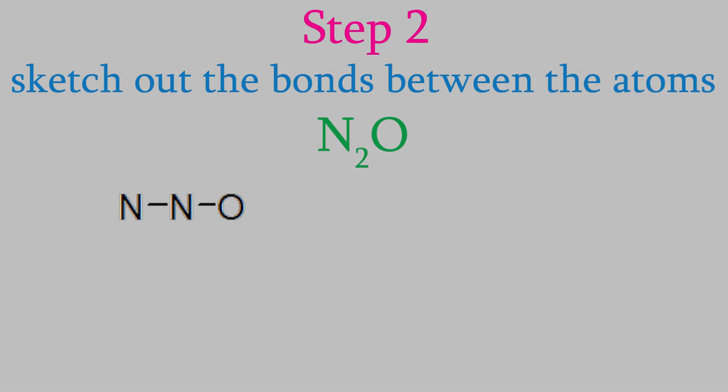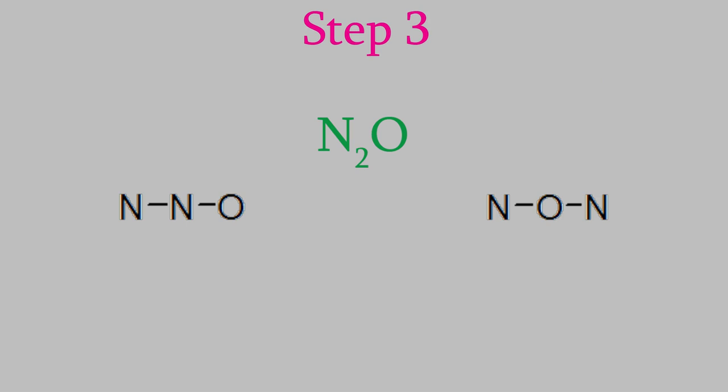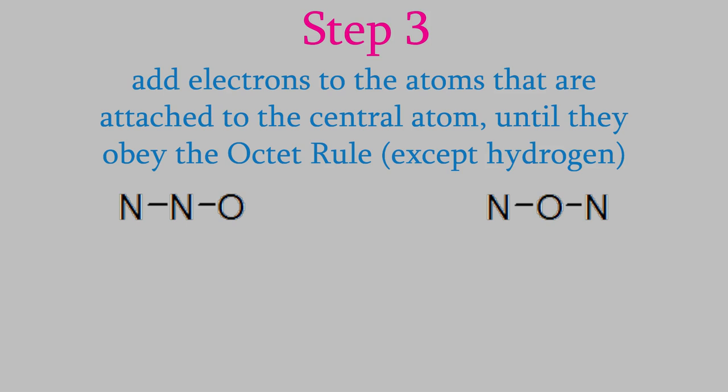One with nitrogen in the middle, and one with oxygen. If you had 3 or 4 different possible central atoms, you'd draw a structure like this for each possibility. Next is step 3, where we add dots to the outer atoms until they obey the octet rule. We'll do that for both of these structures.